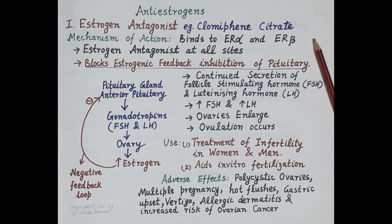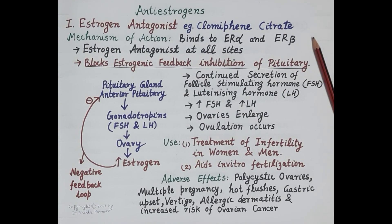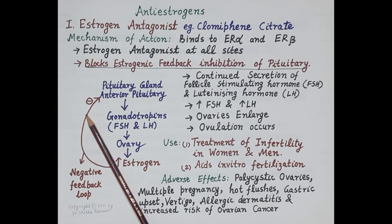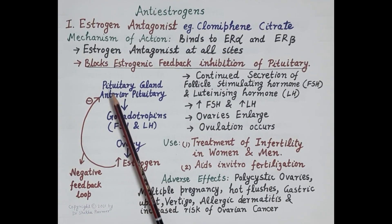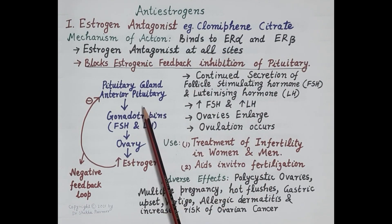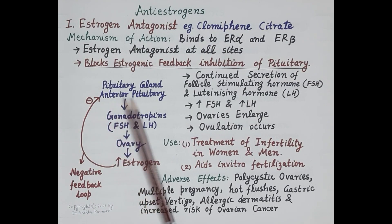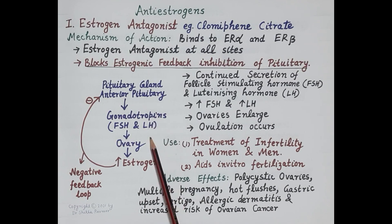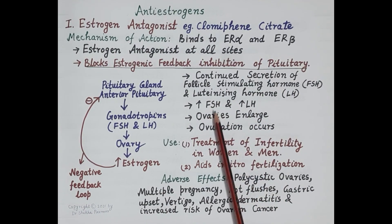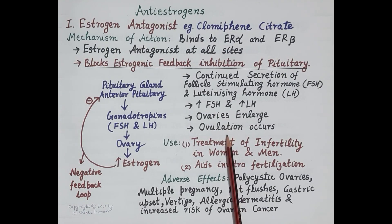Clomiphene citrate is an estrogen antagonist that blocks estrogen receptor alpha and estrogen receptor beta, preventing physiological actions of estrogen. This is perceived as estrogen deficiency by the body, so even in the presence of high estrogen levels the body stops sending negative feedback signals to the anterior pituitary. Thus clomiphene blocks estrogenic feedback inhibition of the pituitary, and the anterior pituitary continuously produces FSH and LH.